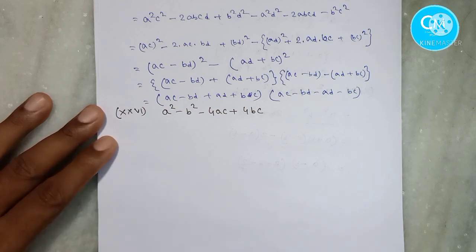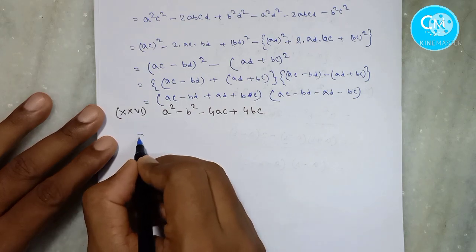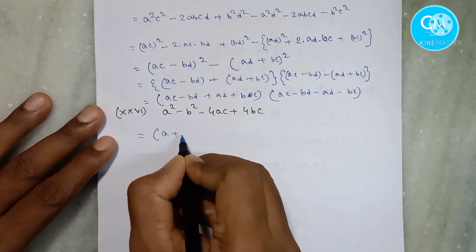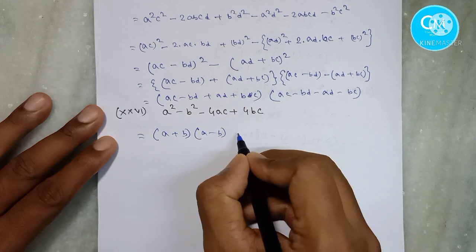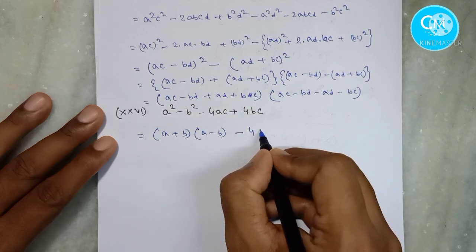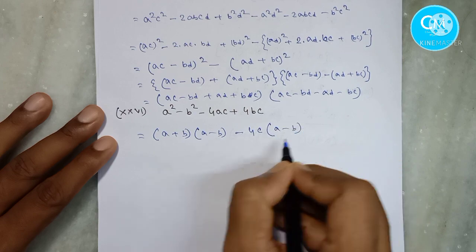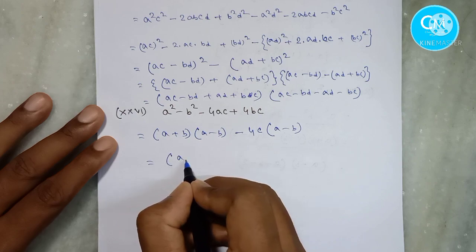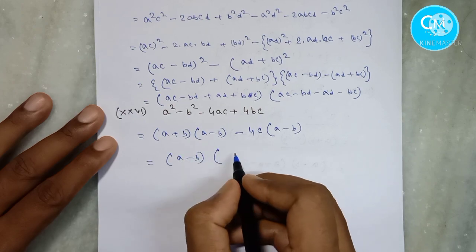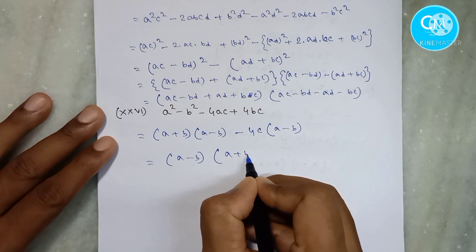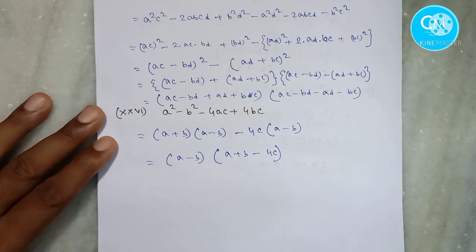So we have to write ac minus b, that will write ac minus b. We have to write a plus b and a minus b. Here we have minus 4c common, so we have a minus b. Then we have a minus b common, so we have a plus b minus 4c. Okay, let's go.